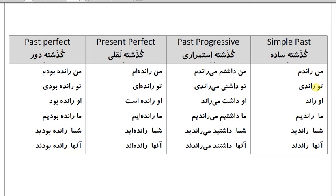Full simple past conjugation — گذشته ساده: من راندم، تو راندی، او راند، ما راندیم، شما راندید، آنها راندند.